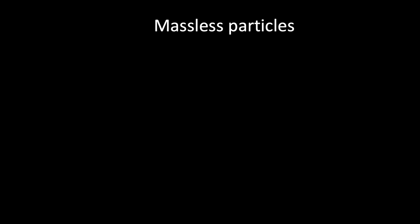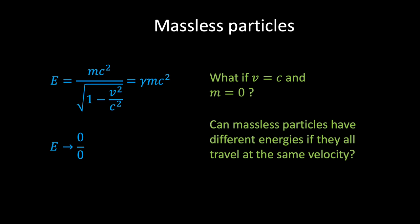So far we have only considered massive objects — objects that when brought to rest have a non-zero rest energy. But not all objects have mass. For example, photons, the fundamental particles of light, are massless and travel at the speed of light. If we substitute m=0 and v=c into E = γmc², both the numerator and denominator are zero, which isn't particularly illuminating. Perhaps this is telling us that we shouldn't think of the energy of a massless particle in terms of velocity, since all massless particles travel at the same speed. Can massless particles have different energies even though they travel at the same velocity? It turns out the answer is yes.